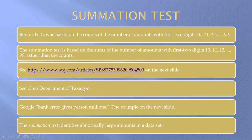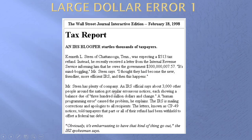We're going to look at some examples of huge errors that we hope would have been detected by this summation test. Kenneth Steen was expecting a $513 tax refund. Instead, he got a bill: you owe us $300 million and change. An IRS official says about 3,000 other people got similar erroneous notices showing a balance due of $300 million and change.